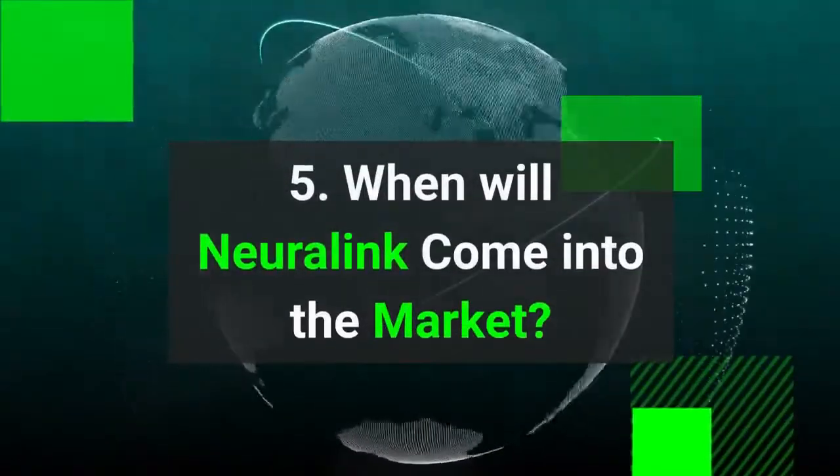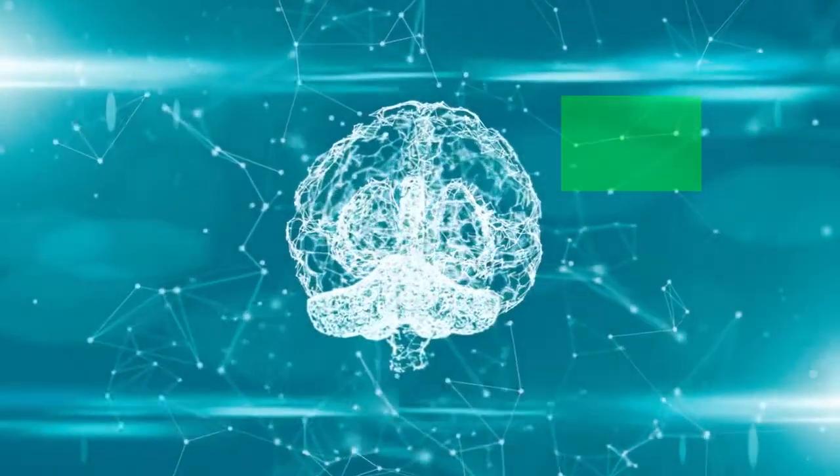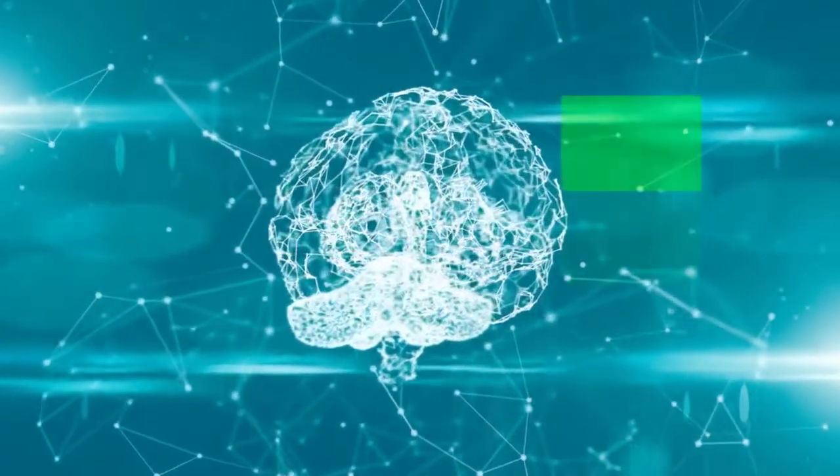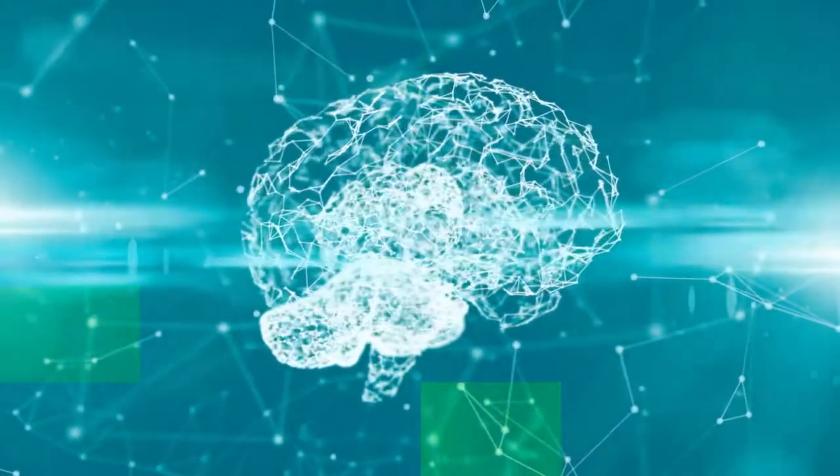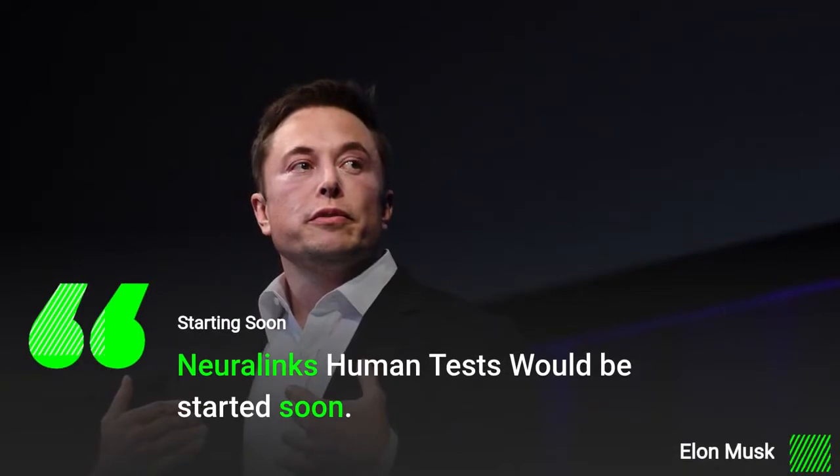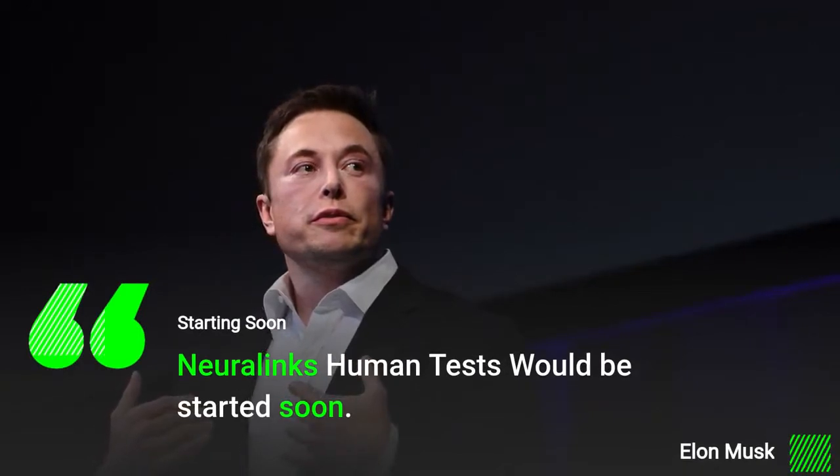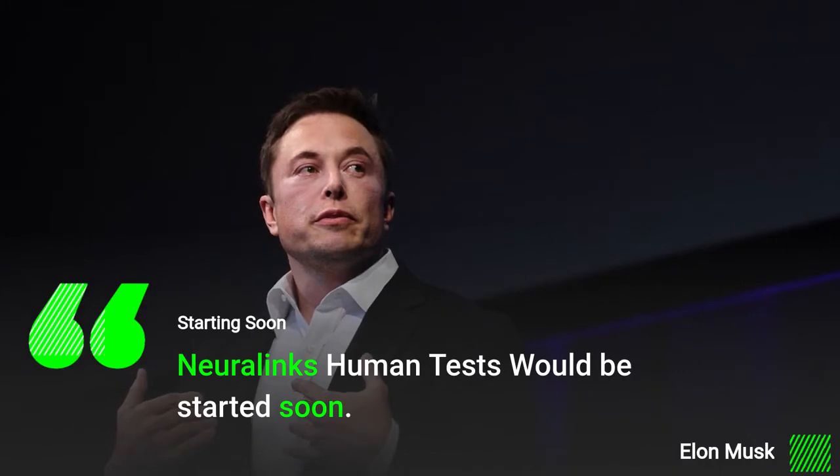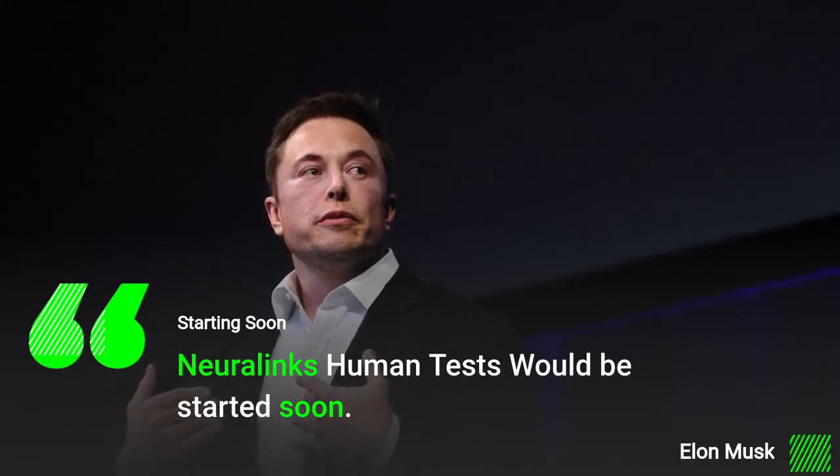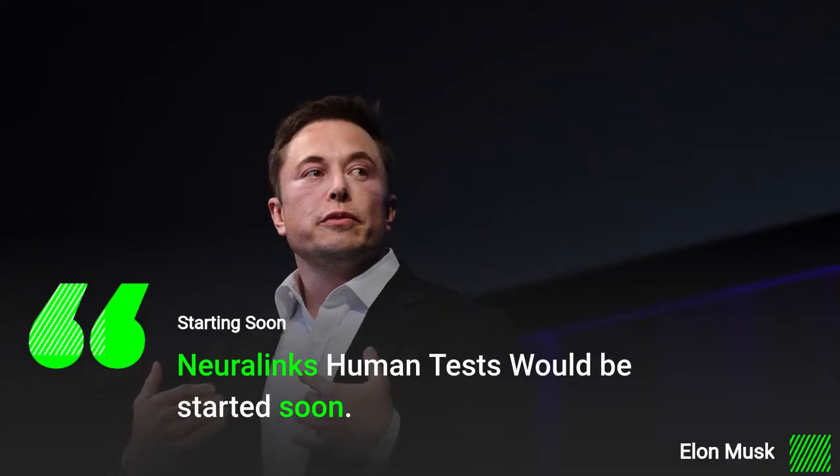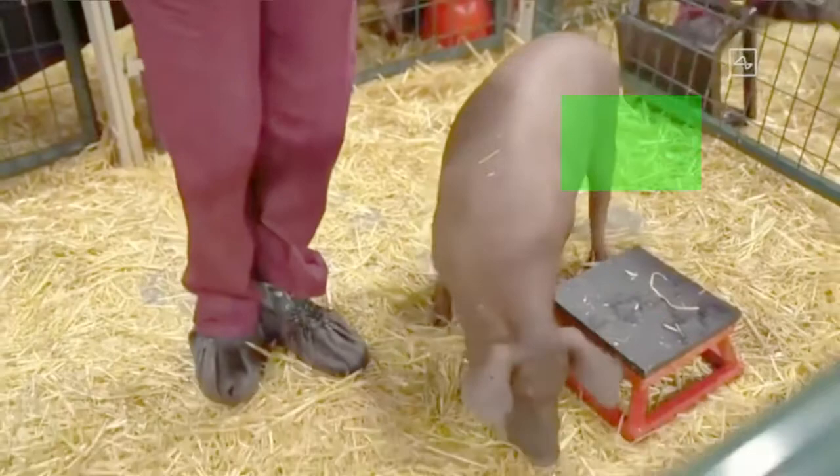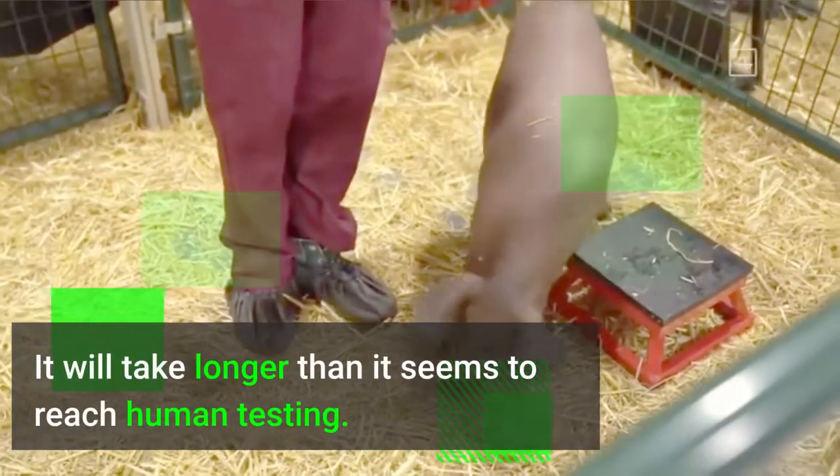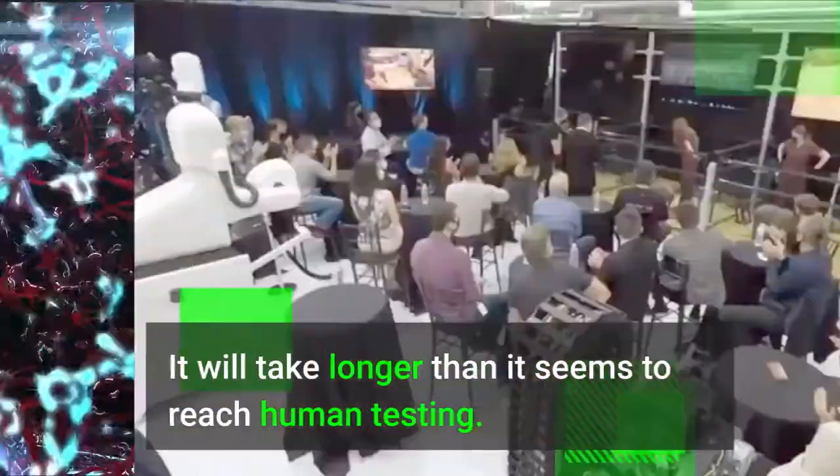When will Neuralink come into the market? Neuralink is a revolutionary device and a complicated device. There is a negative side to it on which the scientists are still working. But Elon Musk seems to be curious to launch this product as soon as possible, as he announced in an interview that Neuralink's human tests would be started soon. It seems like Elon Musk is underestimating the time that is going to be invested in building this device to be human-friendly. In the name of progress, we have three pigs on which the device is being tested. According to other scientists' statements, and the results of the device and the pig, it feels like it will take longer for the device to reach human testing.